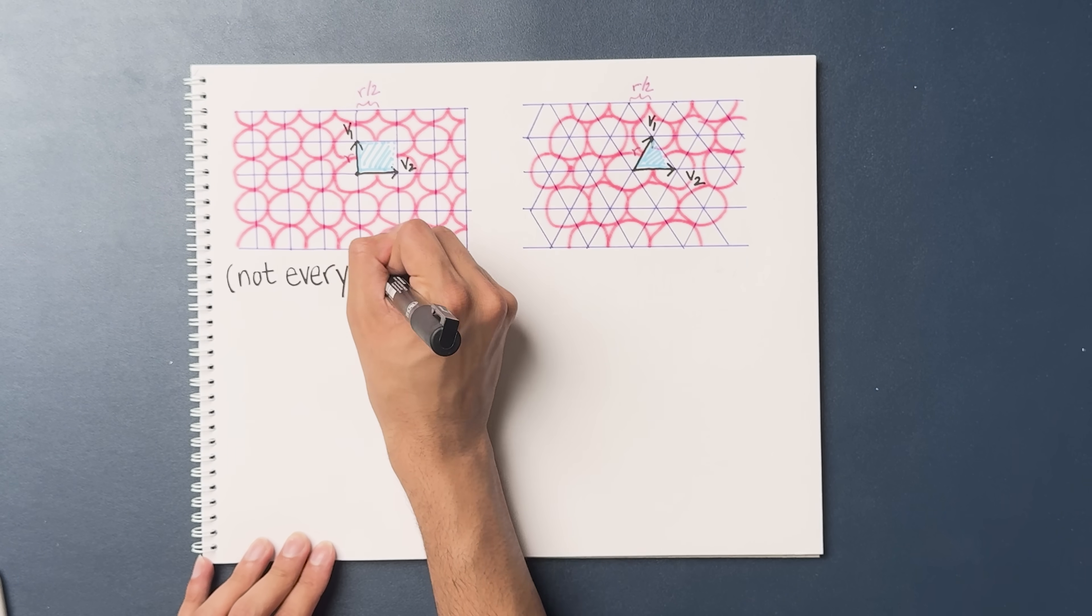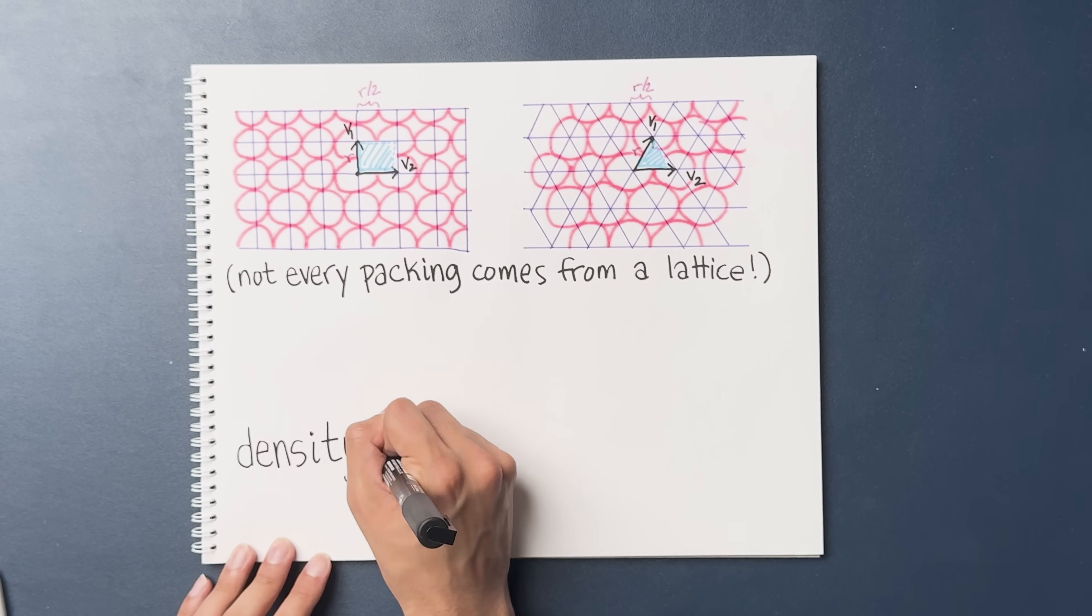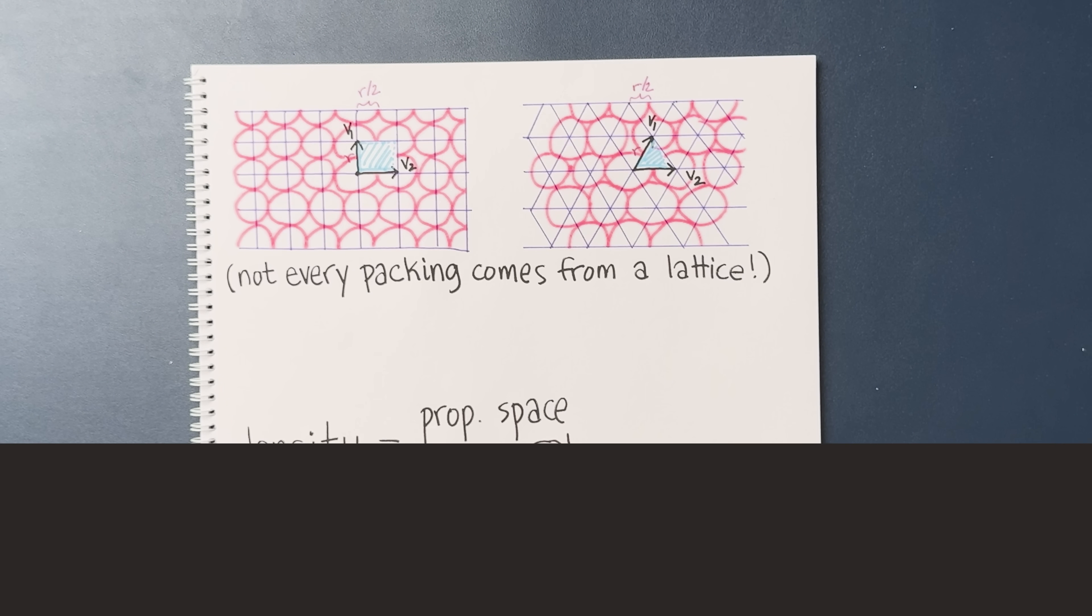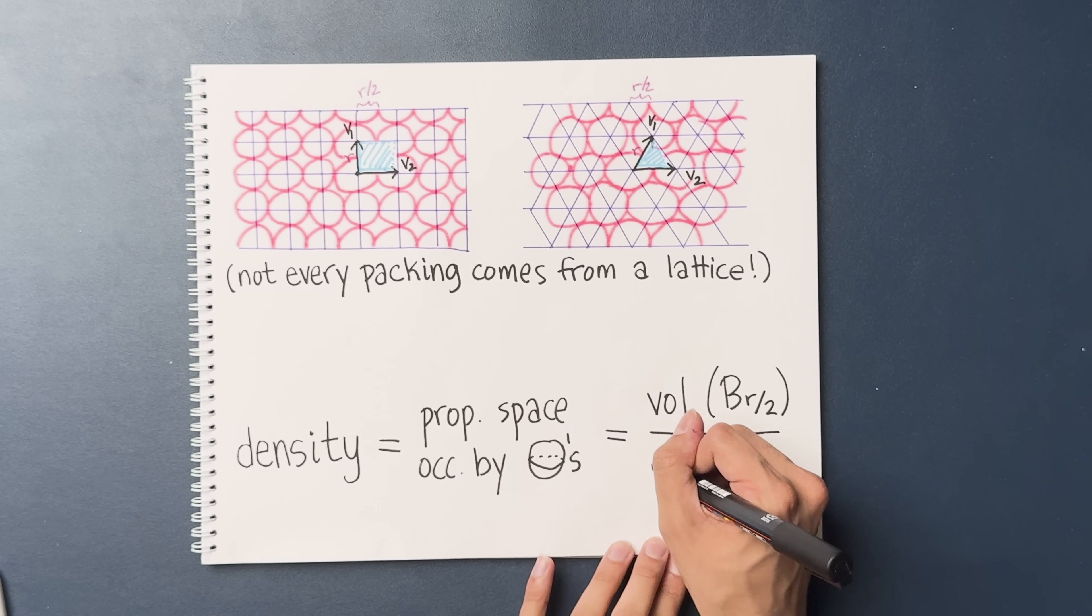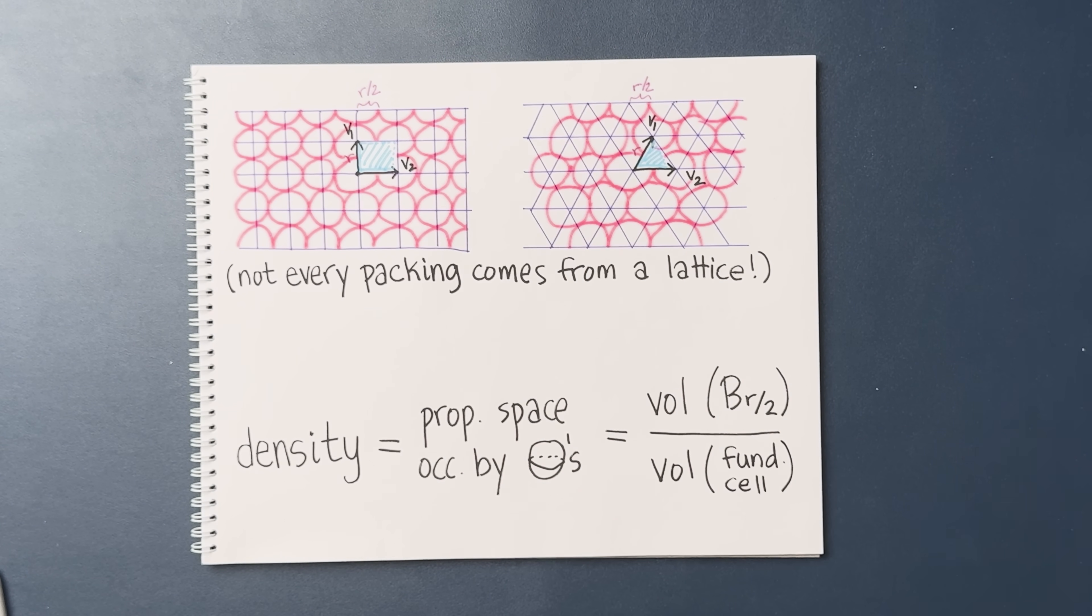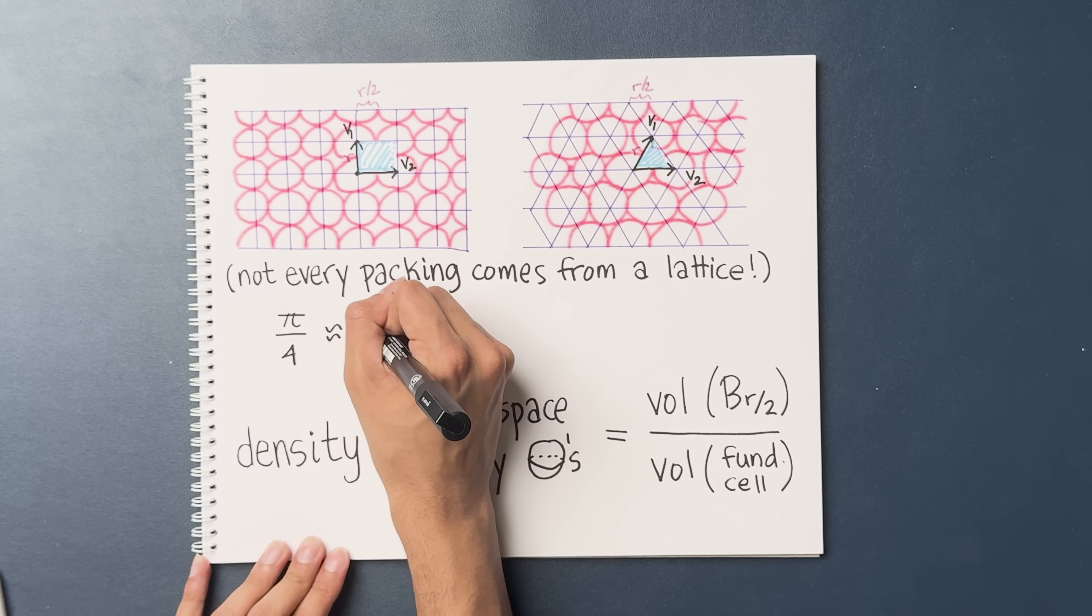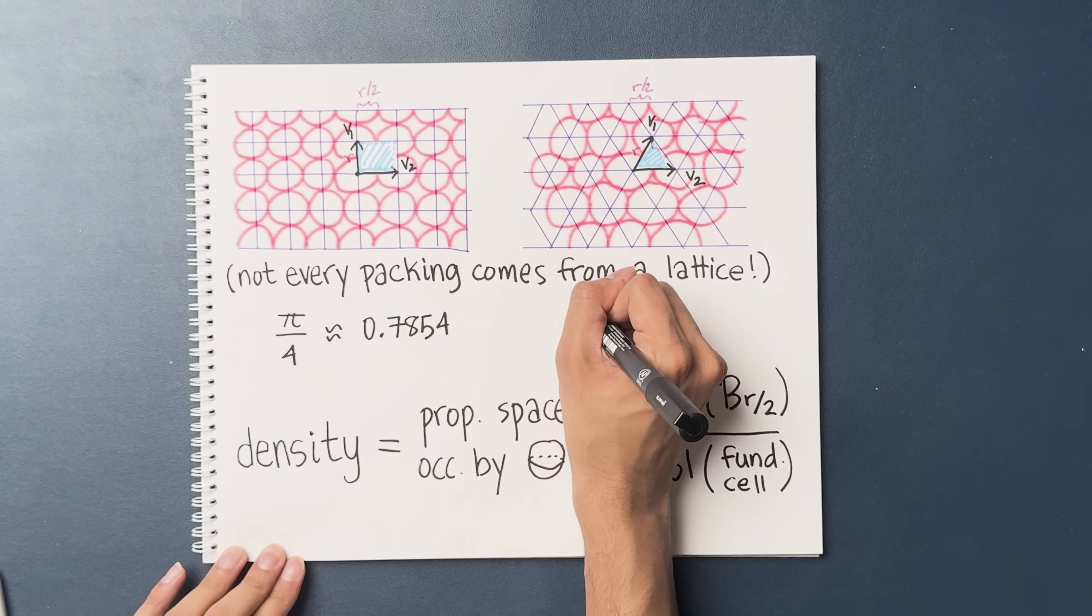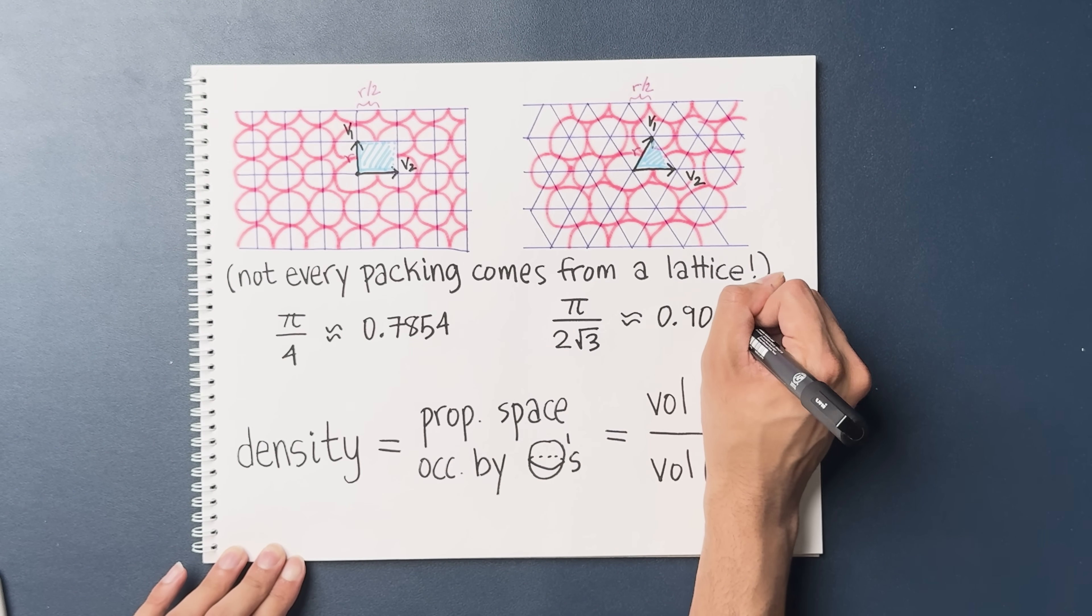Just to clarify, not every sphere packing has to come from a lattice. This is just a way to construct a sphere packing. What is the density of this packing? Well, intuitively, it's the proportion of space that's occupied by the spheres. Precisely, for every cell in the lattice, there's one sphere of radius r over 2. So this is equal to the volume of the sphere of radius r over 2 divided by the volume of the fundamental cell. The density of this packing over here is pi over 4, so approximately 78.54% of the space is occupied by spheres. But this lattice over here has density pi over 2 root 3, so about 90.69% of the space is occupied by spheres.